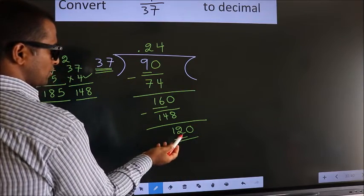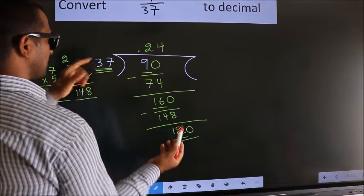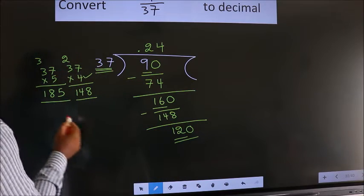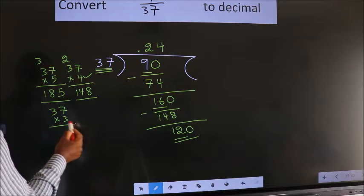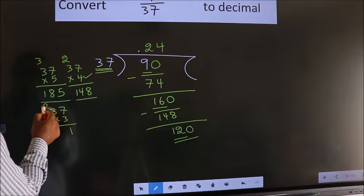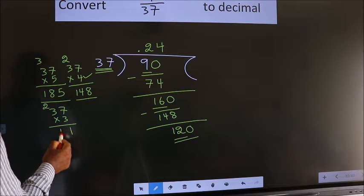A number close to 120 in 37 table is, we go with 3. So, 37 3 times. 3 times 7 is 21. 1, 2. 3 times 3 is 9 plus 2, 11.